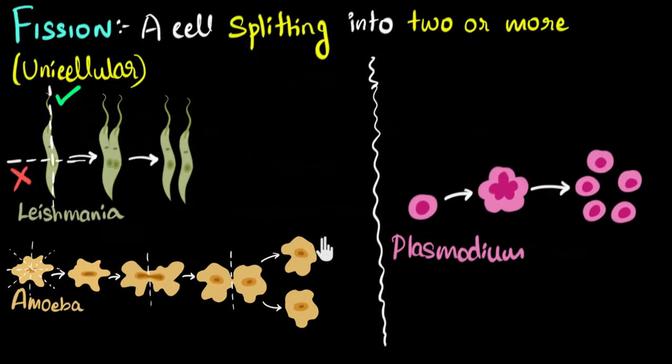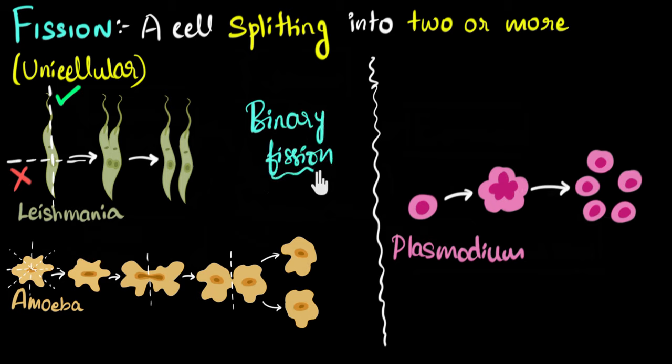Eventually, more than two copies, or more than two offsprings are made over here. So this is another way in which we can classify fission. We can say one kind of fission is where two offsprings are formed. We call this binary fission. And what do you think we'll call this one? Well, since more than two offsprings are formed, we'll call this multiple fission, because multiple offsprings are formed. This is called multiple fission.